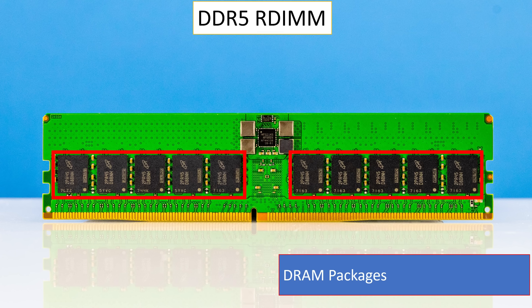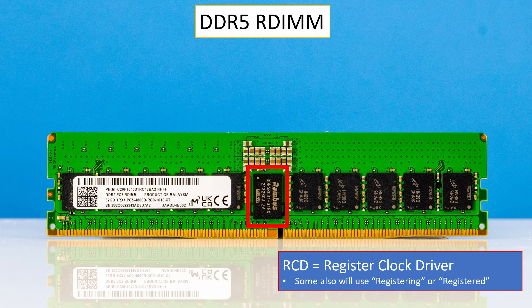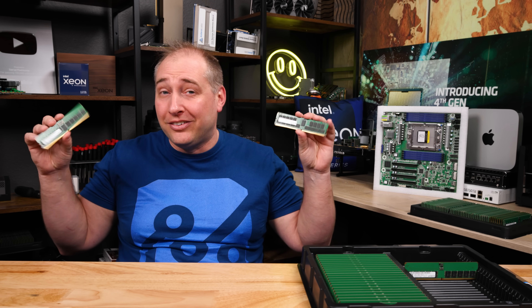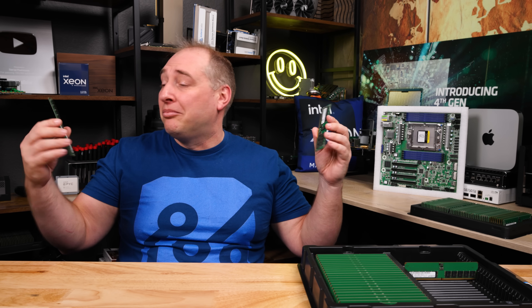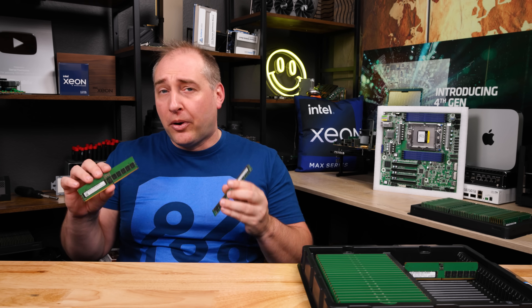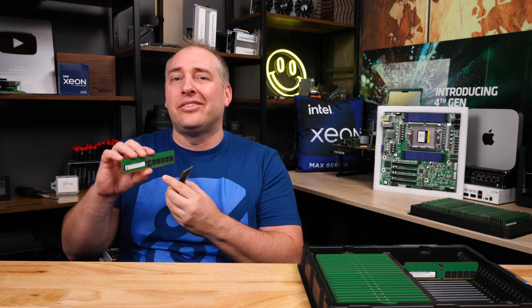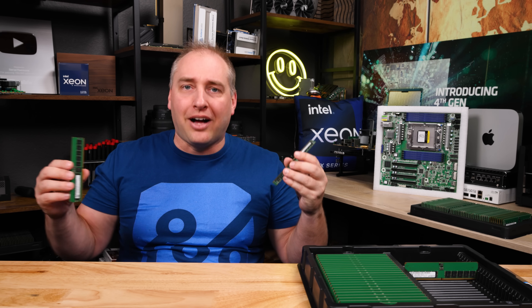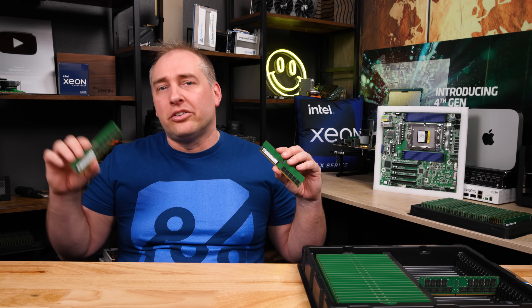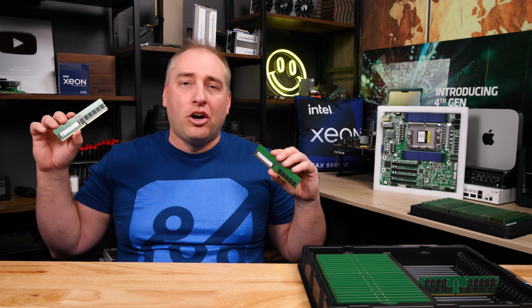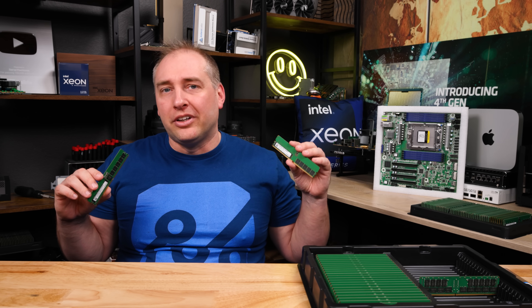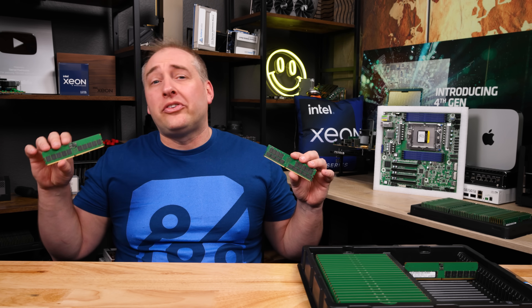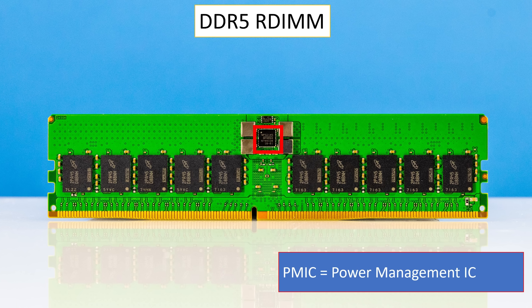Let's talk about the big chips on DDR5 RDIMMs. The RCDs you're going to see in this generation are most likely made by one of two companies: Rambus or Montage Technologies. These happen to be Rambus RCD chips. The purpose of the RCDs is to make sure that all the DRAM packages and DIMMs are running on the proper clocks. These RCDs are the chips you'd find on an RDIMM that you don't necessarily see on an unbuffered ECC DIMM.